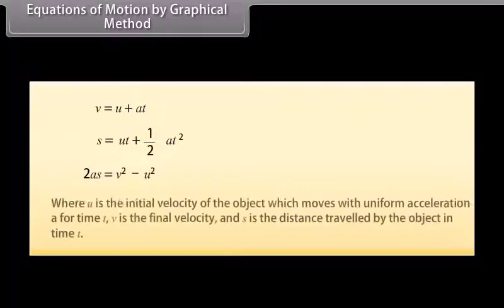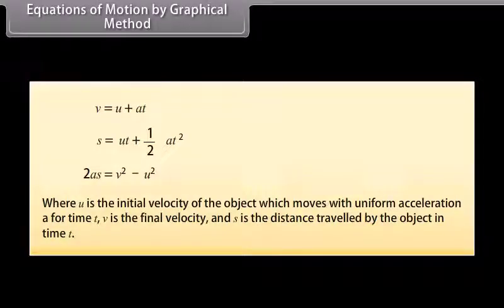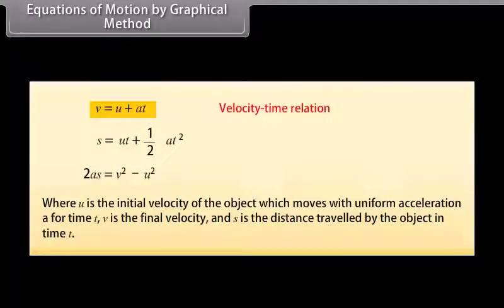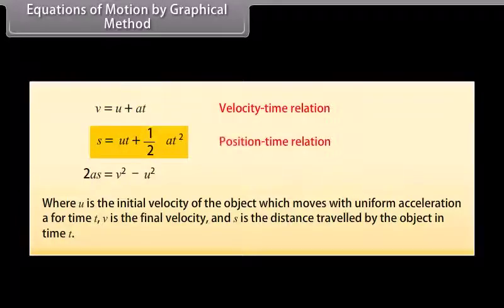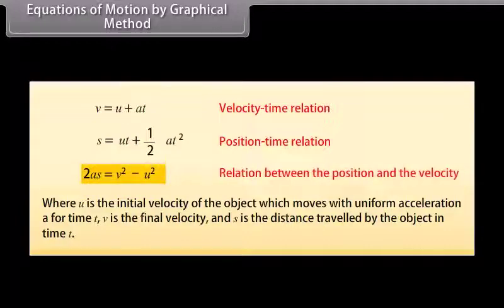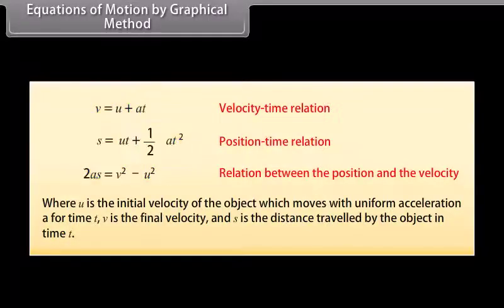Equations of motion by graphical method. The three equations of motion are: V equals U plus AT; S equals UT plus one-half AT squared; and 2AS equals V squared minus U squared. Where U is the initial velocity of the object moving with uniform acceleration A for time T, V is the final velocity, and S is the distance travelled in time T. The first equation describes the velocity-time relation, the second represents the position-time relation, and the third represents the relation between position and velocity.